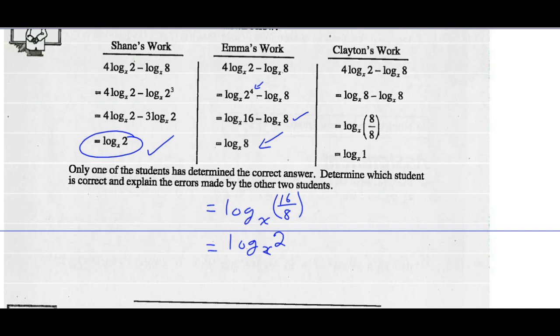And Clayton's work, right off the bat, Clayton made a mistake. It looks like he was trying to do the same thing as Emma over here, but he said that 2 to the 4th is 8, which is incorrect.